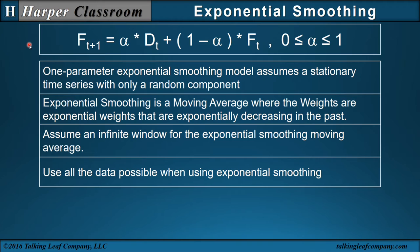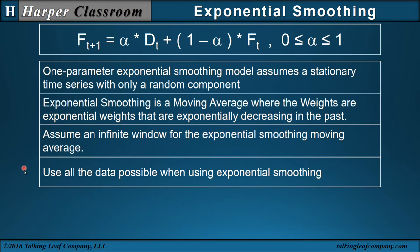Let's return to the concepts of exponential smoothing by looking at some assumptions and characteristics. A one-parameter exponential smoothing model assumes a stationary time series with only a random component. Exponential smoothing is a moving average where the weights are exponentially decreasing in the past. Therefore, we assume an infinite window for exponential smoothing, which implies using all the data possible.